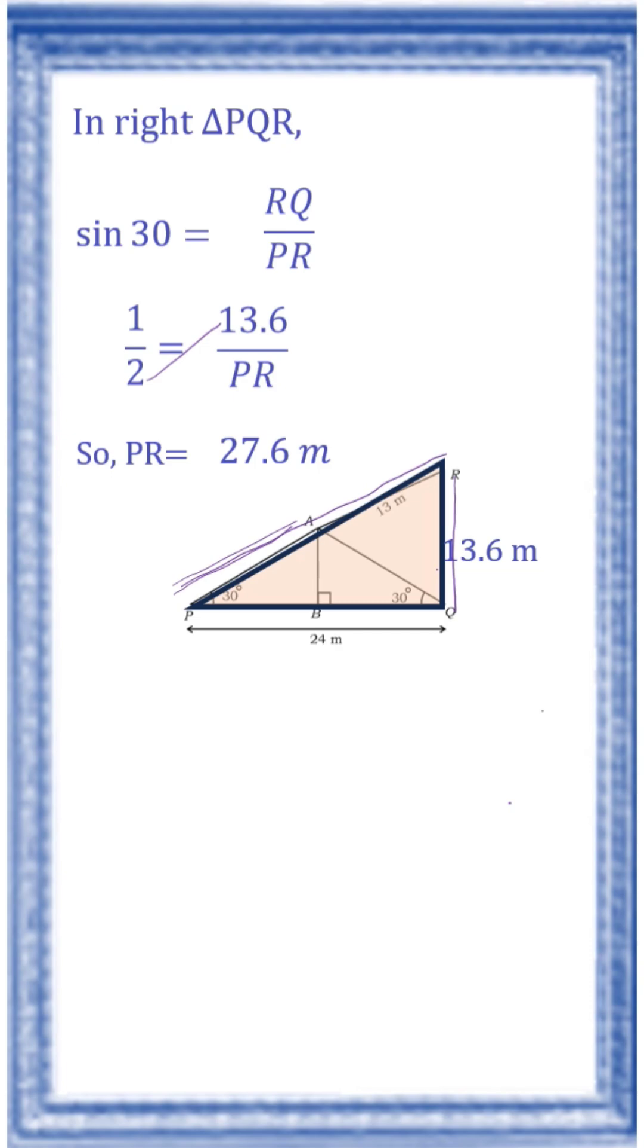Full length is 27.6 and this length is 13. Full length minus this length is equal to AP. So AP is equal to PR minus AR, 27.6 minus 13, that is equal to 14.6 meter. So the length of AP is 14.6 meter.